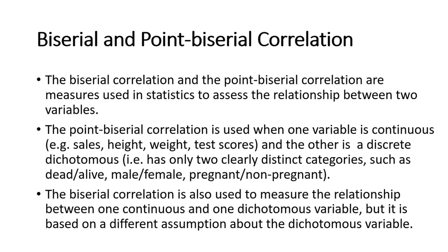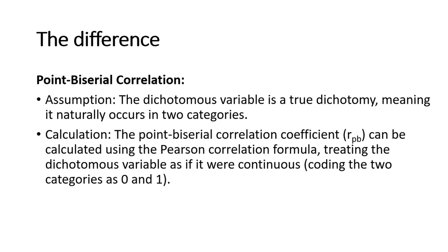The biserial correlation and the point biserial correlation are measures used in statistics to assess the relationship between two variables. The point biserial correlation is used when one variable is continuous — like sales, height, weight, or test scores — and the other is a discrete dichotomous variable, meaning it has only two clearly distinct categories such as dead/alive, male/female, or pregnant/not pregnant. The biserial correlation is also used to measure the relationship between two variables where one is continuous and one is dichotomous, but it is based on a different assumption about the dichotomous variable.